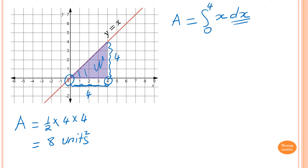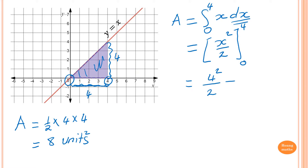Integrating x gives me x squared divided by 2, from 0 to 4. Now I substitute the value in — replace x with 4, so which is 4 squared over 2, minus 0 squared over 2. 4 squared is 16, divided by 2 is 8, minus 0. So the answer is 8 square units.